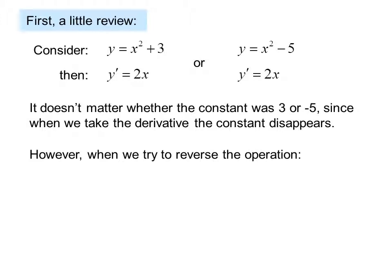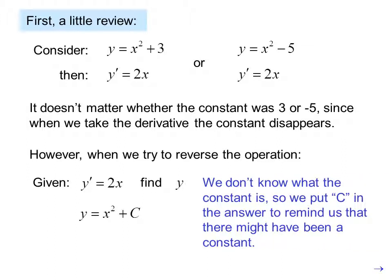However, when we try to reverse the operation, given y prime equals 2x, find y. We get y equals x squared plus c. We don't know what the constant is, so we put c in the answer to remind us that there might have been a constant.